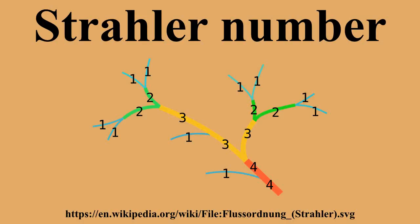Strahler numbering has also been applied to biological hierarchies such as the branching structures of trees and of animal respiratory and circulatory systems. In register allocation, when translating a high-level programming language to assembly language, the minimum number of registers required to evaluate an expression tree is exactly its Strahler number. In this context, the Strahler number may also be called the register number.